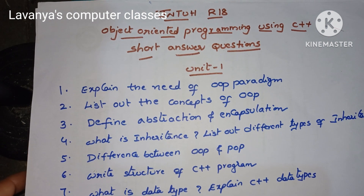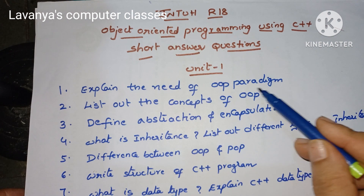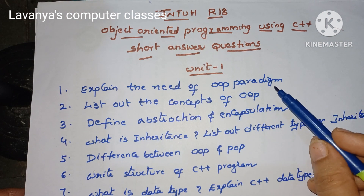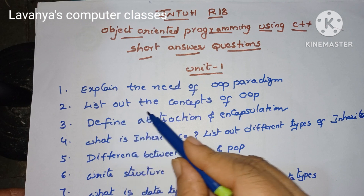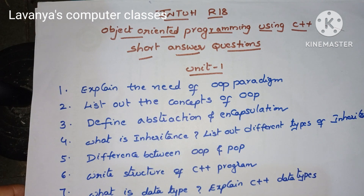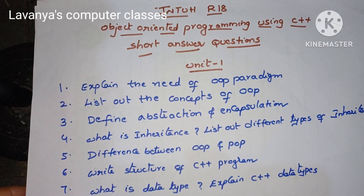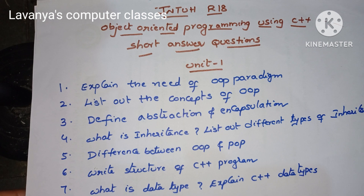These are Jn2H R18 Unit 1 important questions: explain the need of OOP paradigm and object oriented programming paradigm. Second, list out the concepts of OOP. Define abstraction and encapsulation, because all OOP concept definitions are very important. Next, what is inheritance and list out different types of inheritance — this is also a very important question coming in Unit 3. Difference between OOP and POP — object oriented programming and procedure oriented programming — is also a very important question.